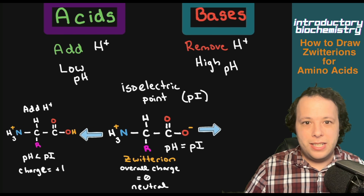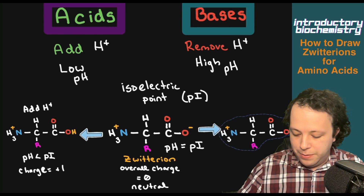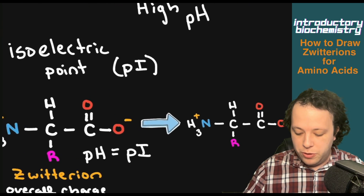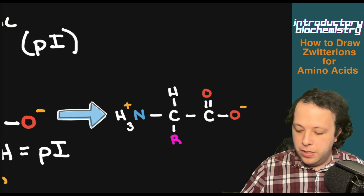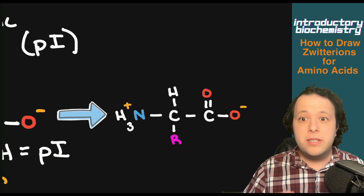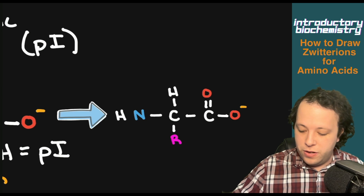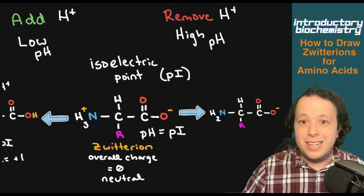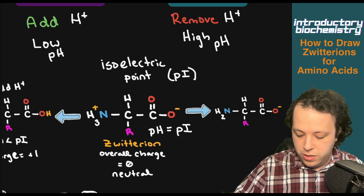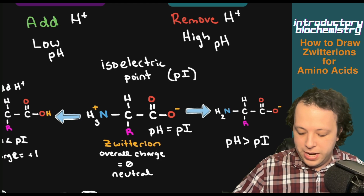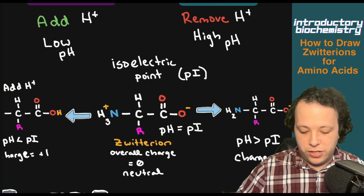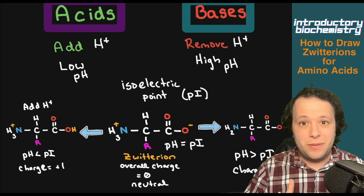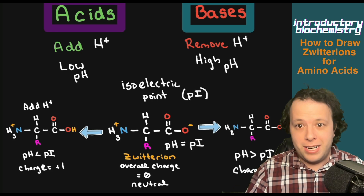If we want to go basic, we're going to be removing H+. Where can you remove H+ from your zwitterion? The easiest place is the amino group, which has an extra hydrogen. We remove that positive charge by taking away a hydrogen, making an ion that can act like a base. When the pH is greater than the PI, we now have a charge of negative one. If you remember acids add H+ and bases remove H+, it makes it a lot easier.